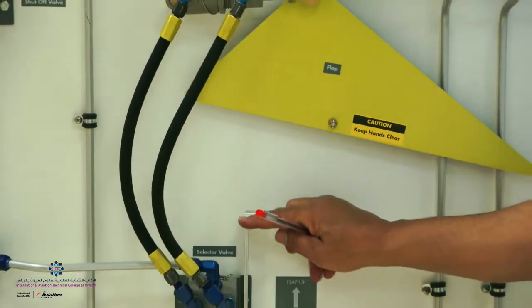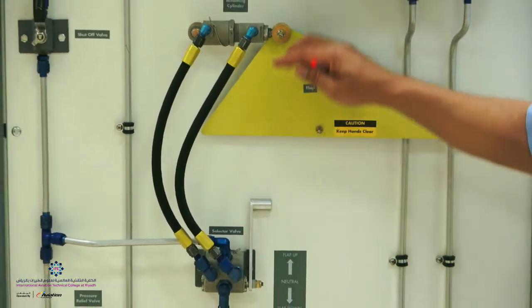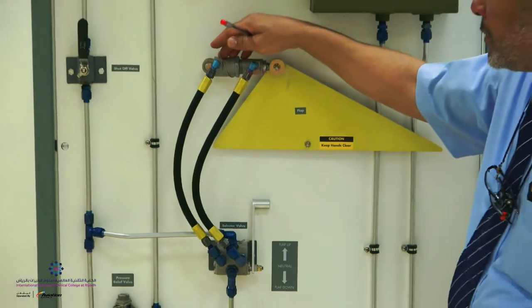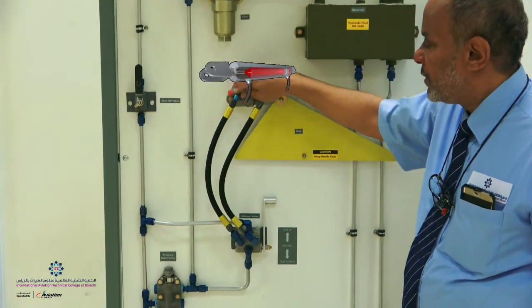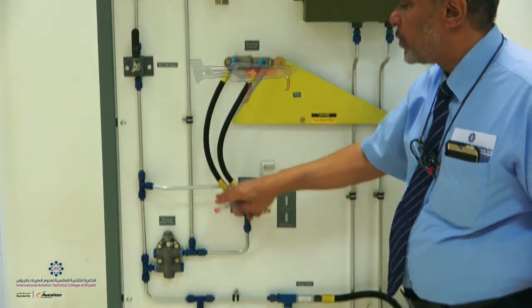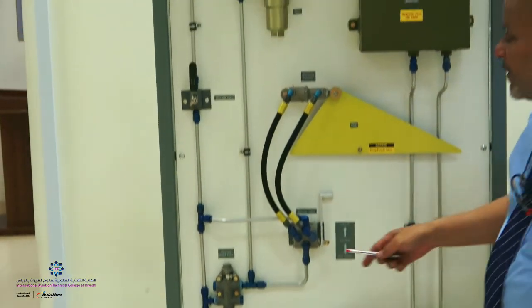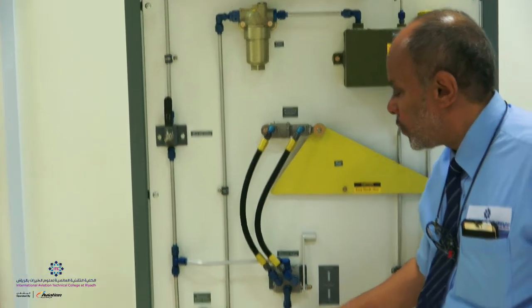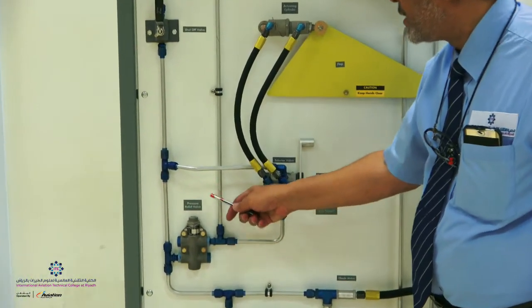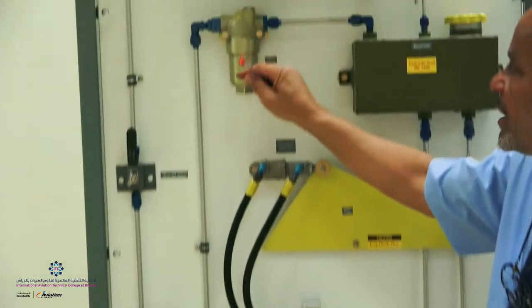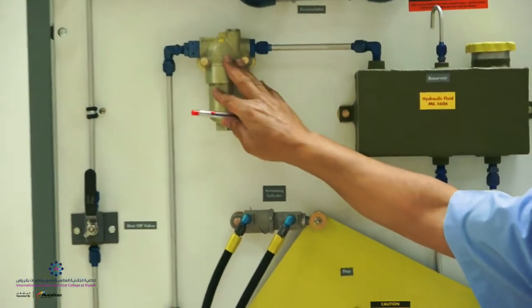Once the fluid moves to the third part known as the return. The fluid will go from the actuator back to the reservoir, as we said, through the filter for cleaning, and back to the reservoir.